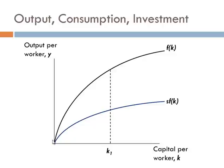If we have capital per worker at level k1, we can see that total output equals the height of the production function — plugging capital per worker into the production function gives us the maximum we can produce. Investment per worker is the height of the investment function, and the difference between the investment function and the production function must be consumption per worker.